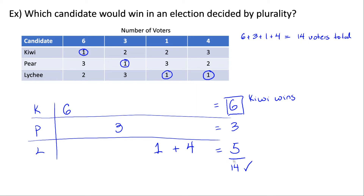This is one way to check yourself on plurality problems to make sure you counted all the votes. Another way to check your work is to verify that all the numbers you used — six, three, one, and four — correspond to voter counts on the table. If you write them all out and keep track of what you're adding, you're less likely to make mistakes.